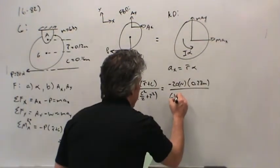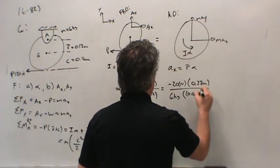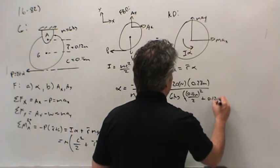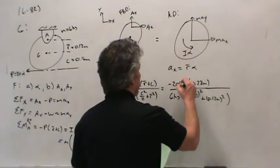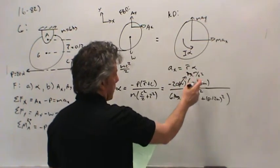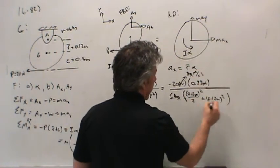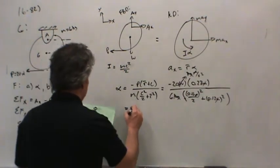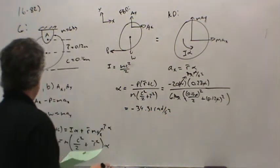So 6 kilograms in the denominator times C squared, 0.16 meters squared over 2, plus R bar 0.12 meters squared. A newton is a kilogram meter per second squared, so the kilograms cancel, meters squared cancel, and we end up with radians per second squared. It's negative 34.31 radians per second squared. There's the angular acceleration.